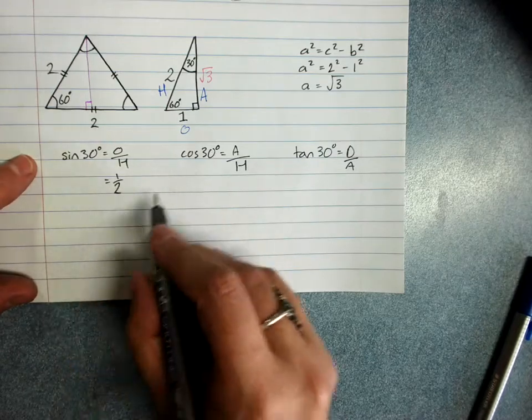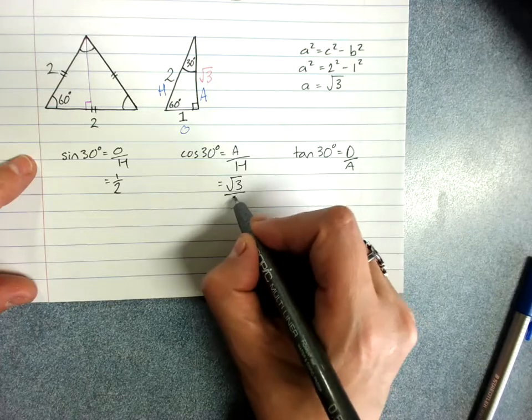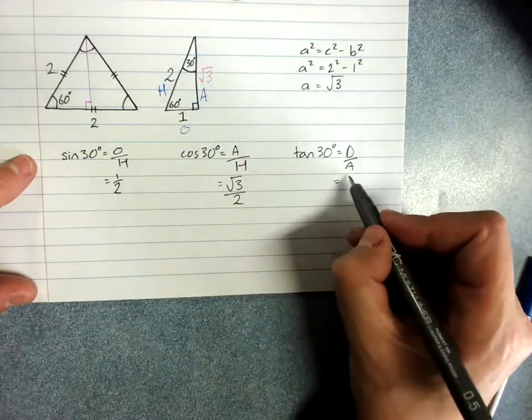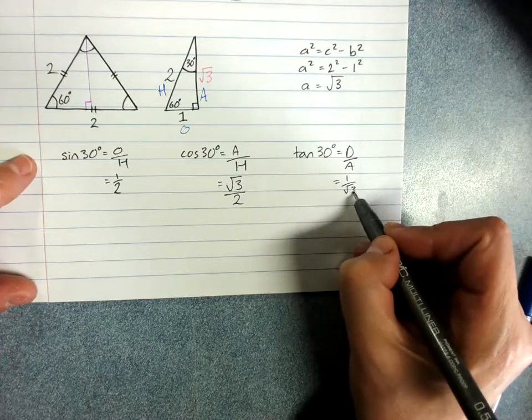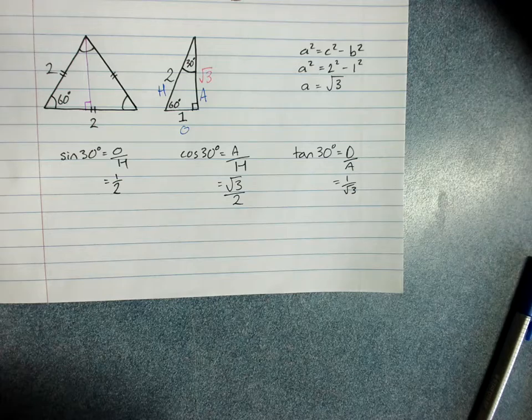1 over 2, 1 half. Cos of 30, adjacent over hypotenuse, root 3 over 2. Tan of 30, opposite over adjacent, 1 over root 3. I'm running out of space.